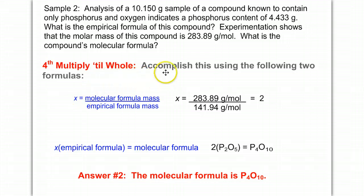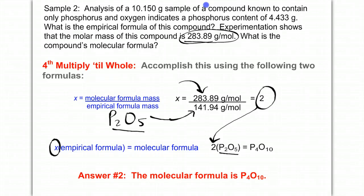To determine the molecular formula, I'm going to take the molar mass that was given in the problem, 283.89 grams. I'm going to add up the mass of P2O5 in order to divide. Once I divide the masses of those two, I get a whole number of 2. That 2 is my x, which I will place in front of P2O5, my empirical formula. When I multiply that across to become whole, I have 2 times 2 is 4, 2 times 5 is 10, giving me my molecular formula: P4O10.